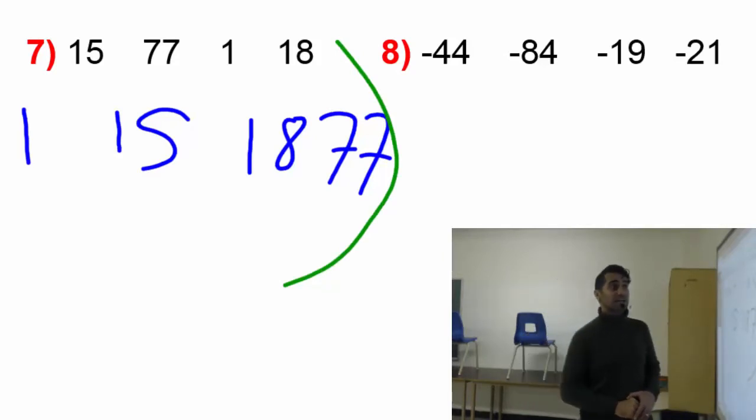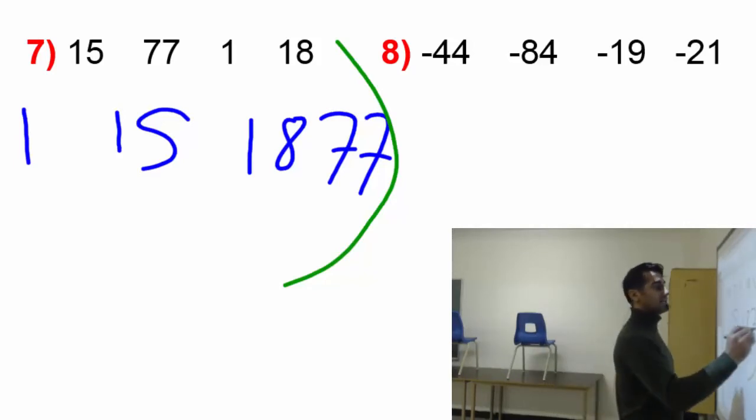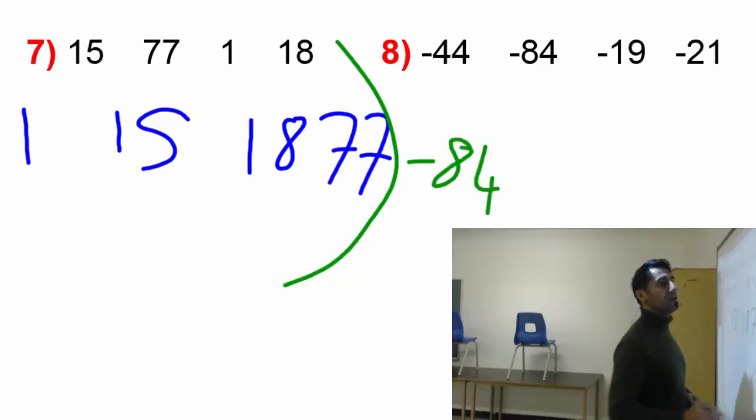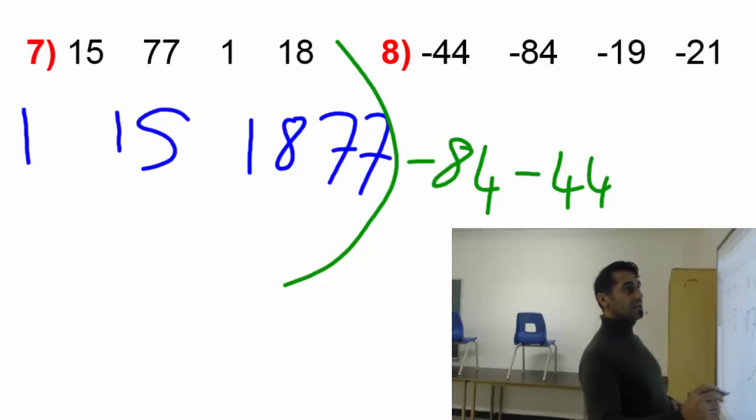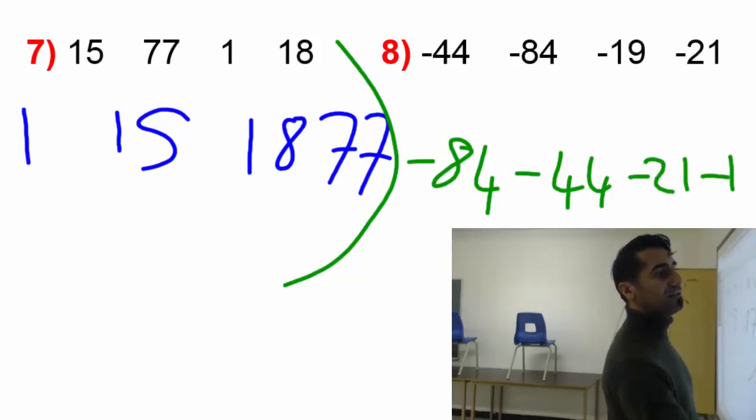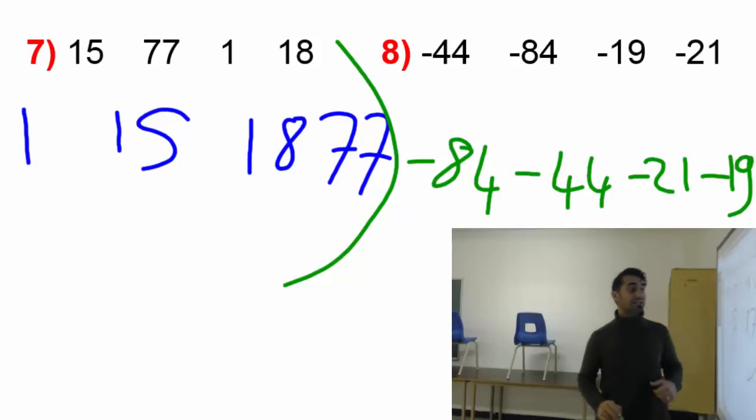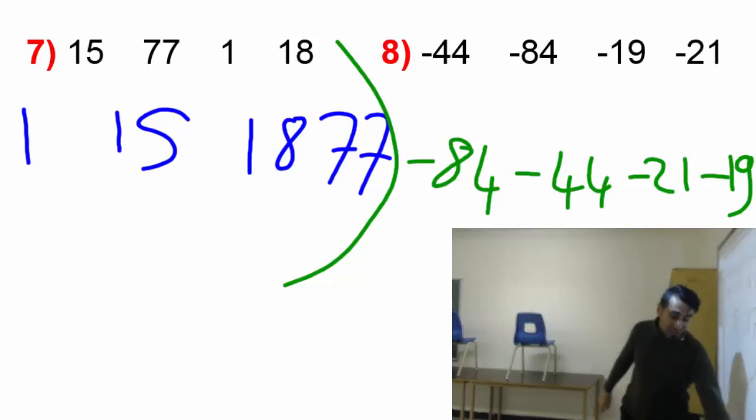How about here? There, all numbers are negative, so the one that's too far from 0 is the lowest in value. In this case, negative 84, and then negative 44, and then negative 21, then negative 19. That's the way you arrange the integers.